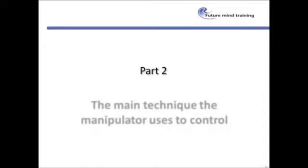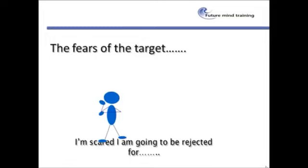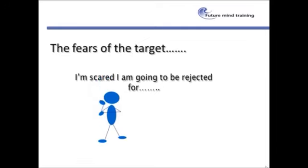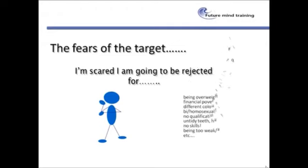Part two: the main techniques the manipulator uses to control. To fully understand this section, we need to understand the fears of the target. The number one fear of any person who's a target is: 'I'm scared I'm going to be rejected for —' and then simply fill in the blank. And the blank can become an endless list.